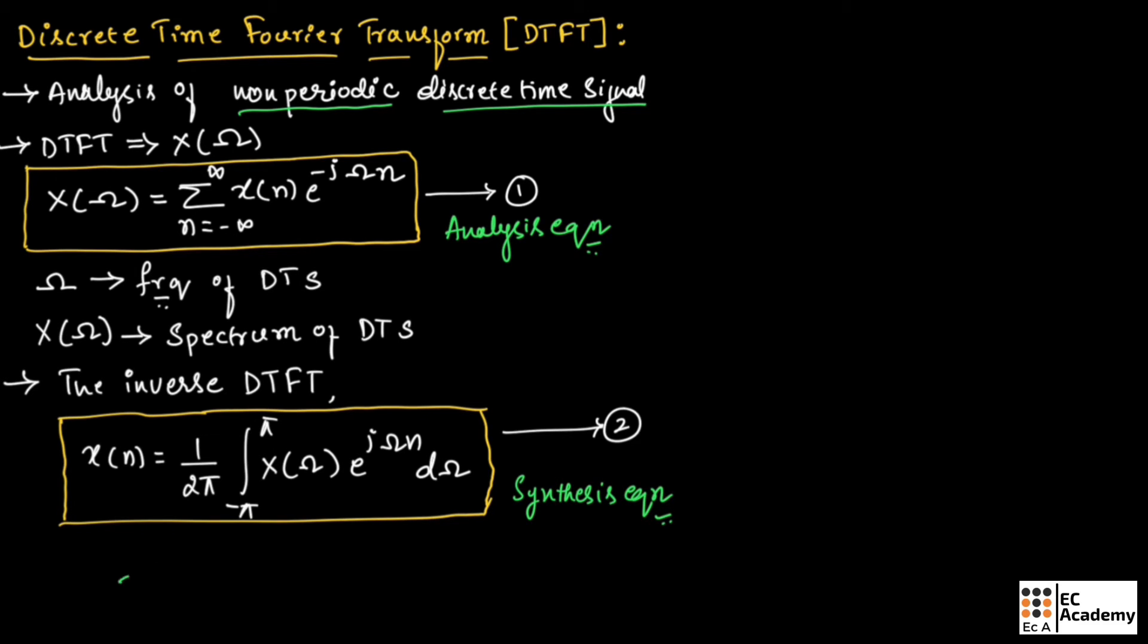Therefore, for X of n, if we perform DTFT, we will obtain X of omega. And for X of omega, if we perform inverse DTFT, we will get X of n.